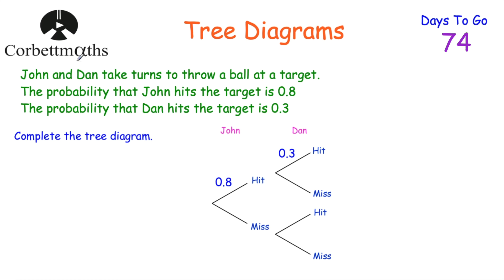Here we've got a tree diagram where we're told that John and Dan take turns throwing a ball at a target. John's going to throw first and then Dan. We're told that the probability that John hits the target is 0.8, and the probability that Dan hits the target is 0.3. So John is better at hitting the target than Dan, and we've been asked to complete the tree diagram.